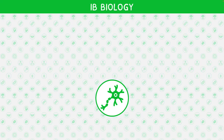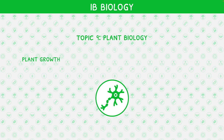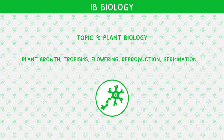Welcome back to our IB Biology video series. This is the second and final video in IB Biology Higher Level Topic 9, Plant Biology, where we will be looking at plant growth, tropisms, flowering, reproduction, germination, and micropropagation.